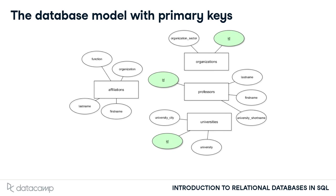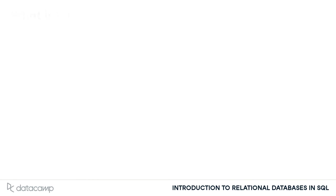You'll add so-called primary keys to the three different tables. You'll name them ID. In the entity relationship diagram, keys are denoted by underlined attribute names. Notice that you'll add a whole new attribute to the professor's table, and you'll modify existing columns of the organization's and university's tables.